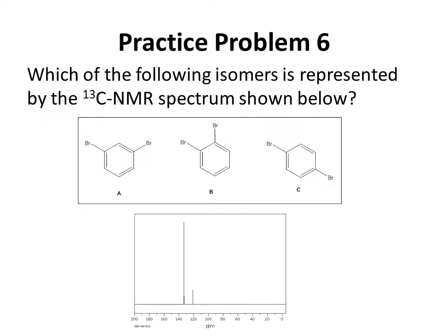Practice Problem 6: Which of the following isomers is represented by the carbon-13 NMR spectrum shown below? When you examine these isomers, they really have the same kinds of functional groups — a benzene ring and carbons attached to bromines — so focusing on chemical shift values won't help you. But focusing on symmetry will allow you to distinguish A from B from C, because that will determine how many unique carbons there are for each isomer.